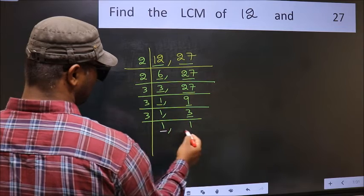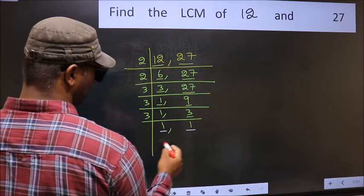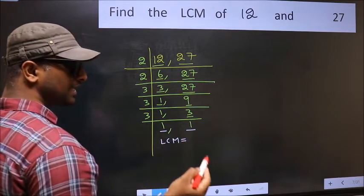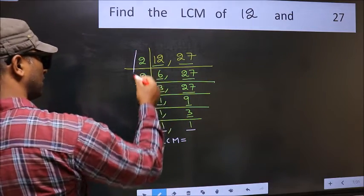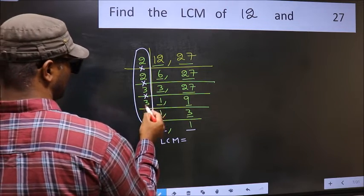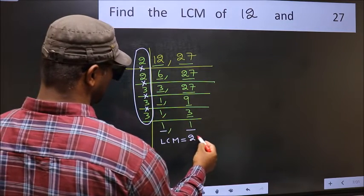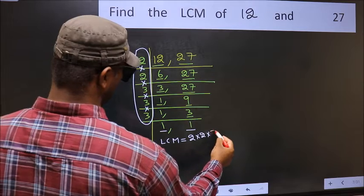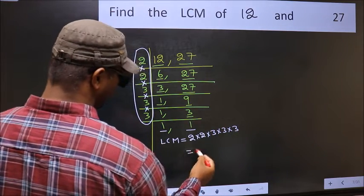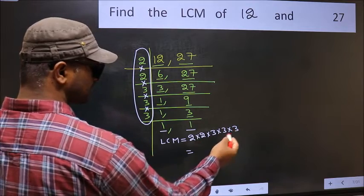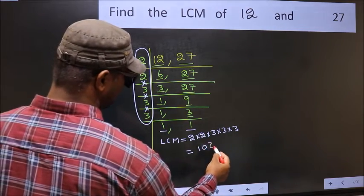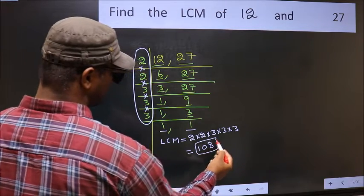We got 1 in both places. So our LCM is the product of these numbers — that is 2 times 2 times 3 times 3 times 3. When we multiply these numbers, we get 108 as our LCM.